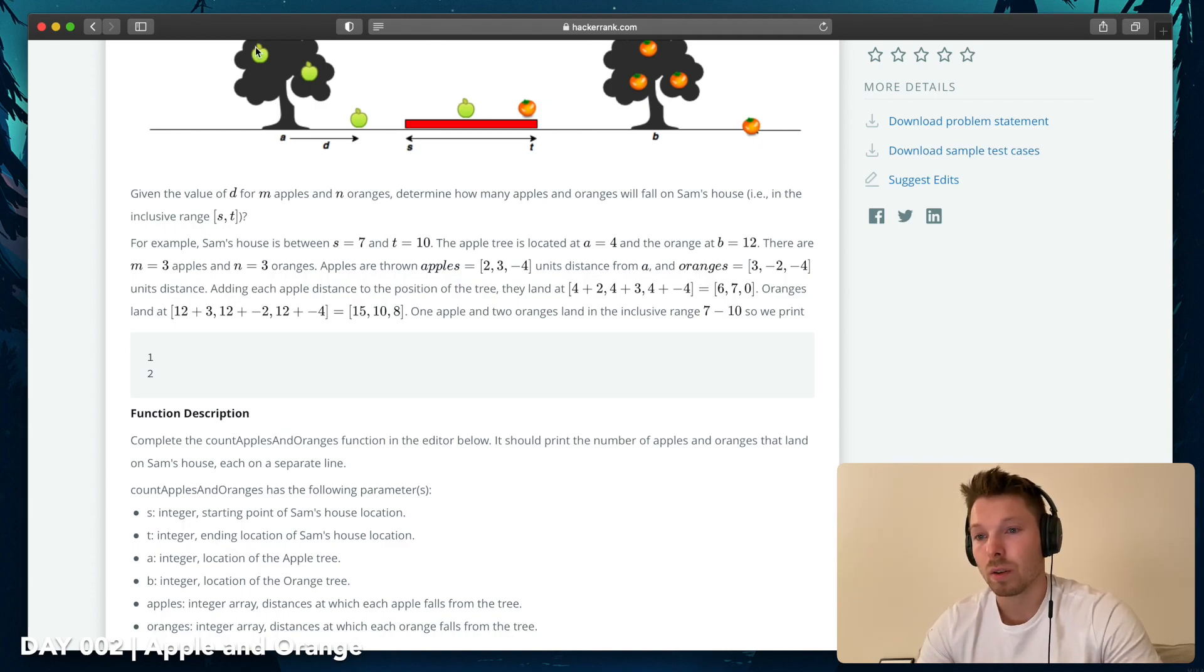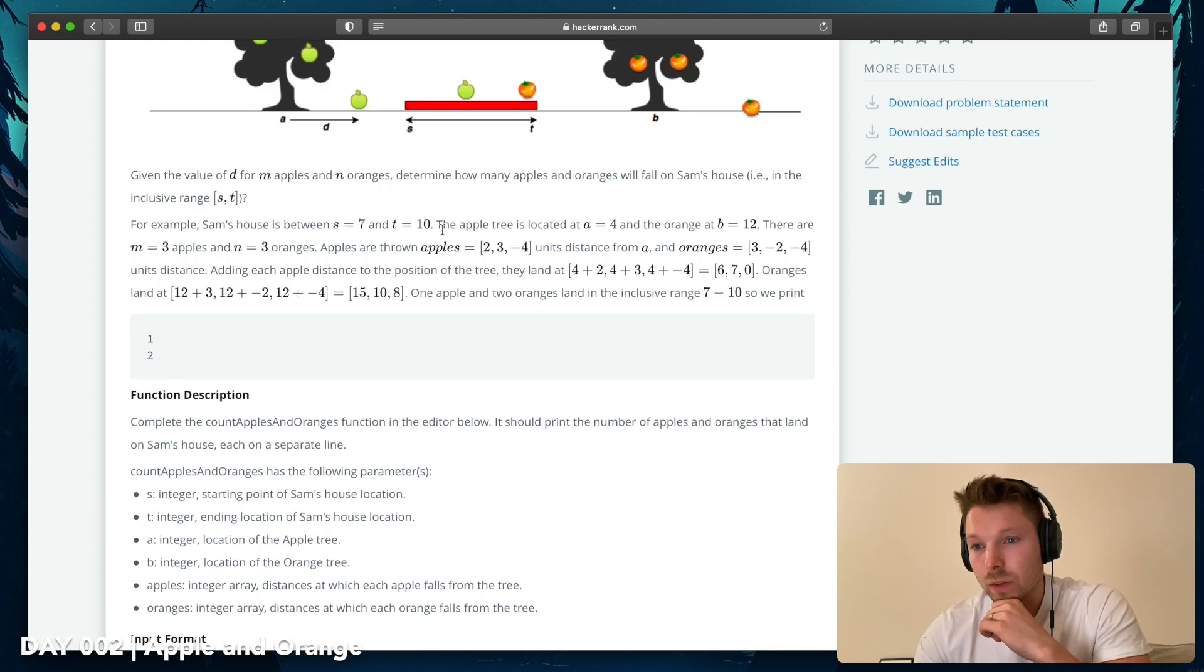Six, seven, zero. Oranges land at whatever. One apple and two oranges land in the exclusive range of seven to ten, so we print one and two. So that means one apple and two oranges in that range, seven to ten.